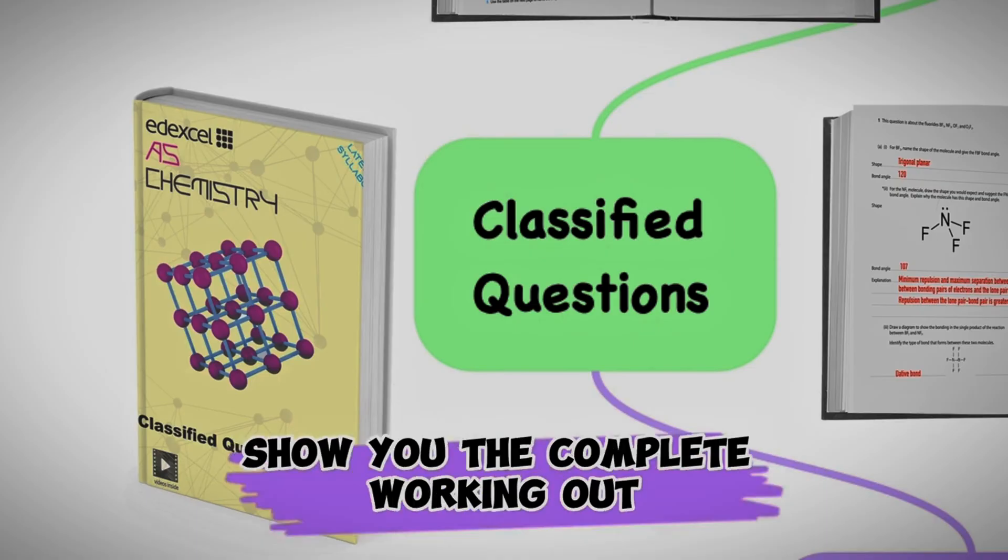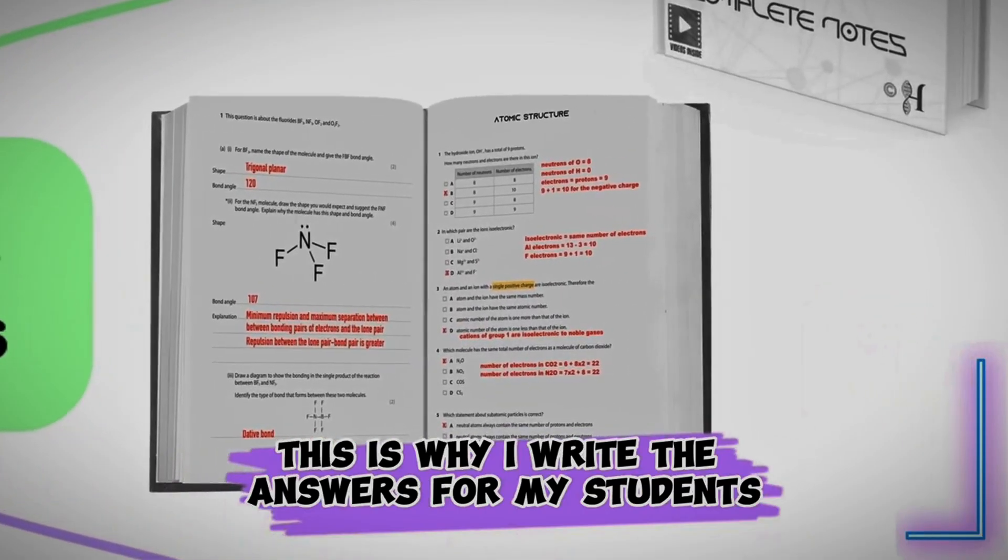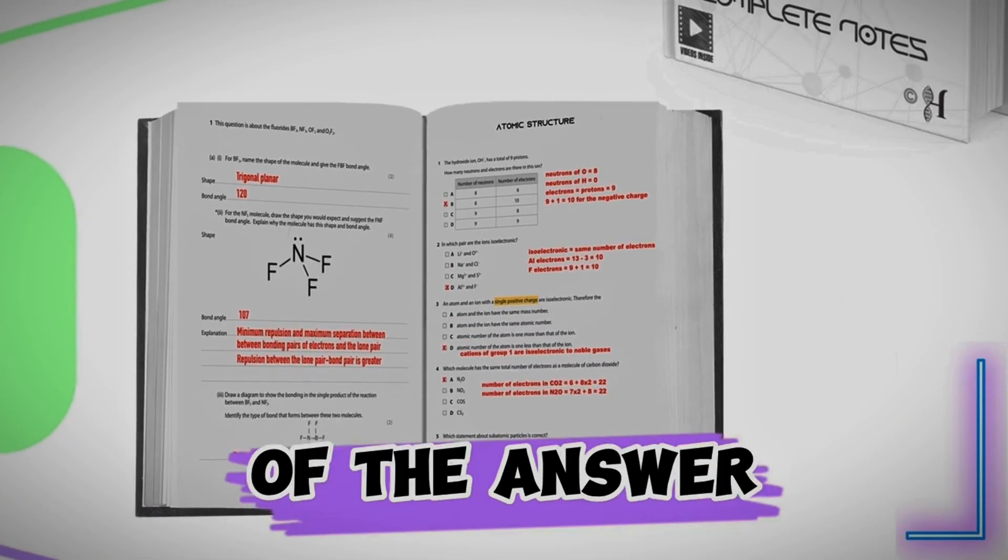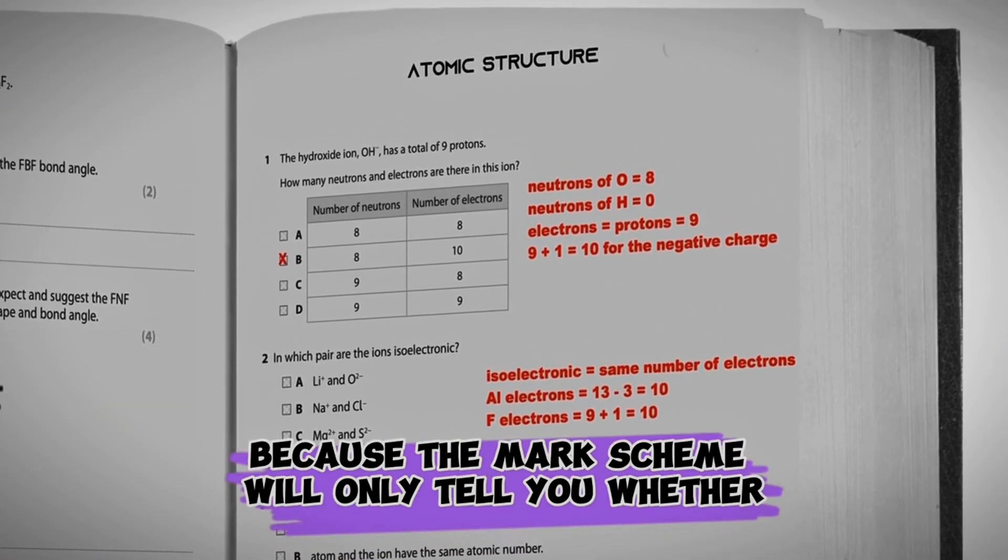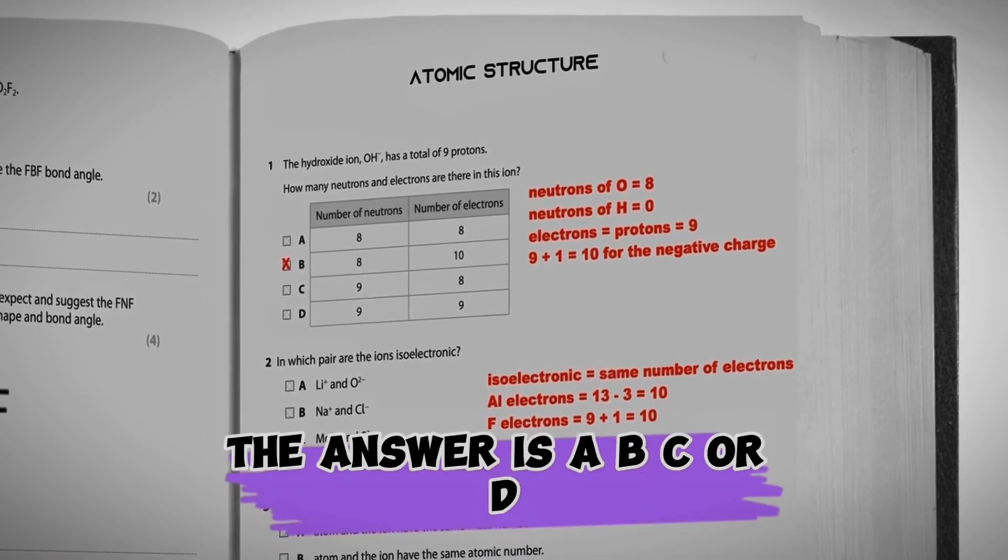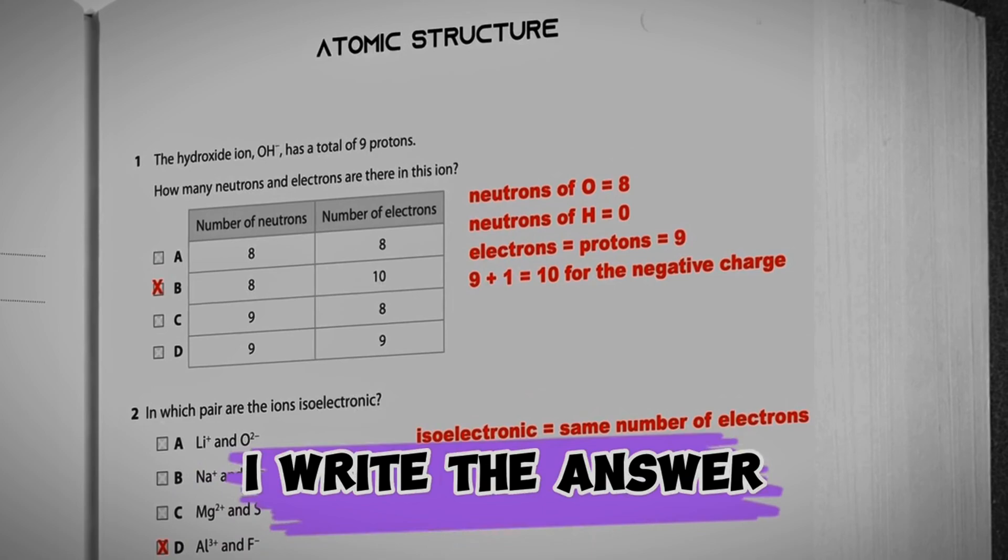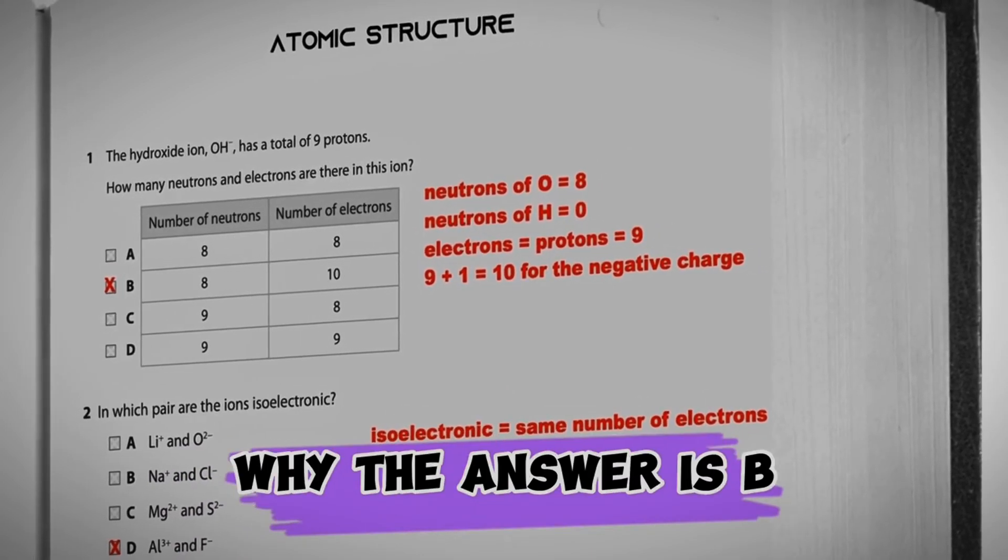However, mark schemes may not show you the complete working out. This is why I write the answers for my students to show them the full explanation of the answer. This is quite helpful when it comes to multiple choice questions because the mark scheme will only tell you whether the answer is A, B, C or D. But in my case, I write the answer and also show the reason why the answer is B, for instance.